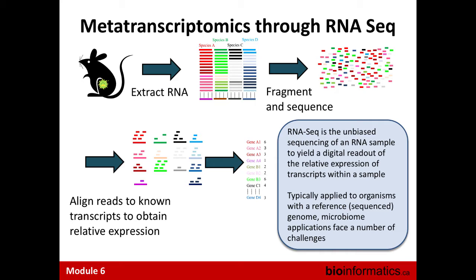How do we actually go about doing metatranscriptomics? It's essentially RNA-seq applied to the microbiome rather than an individual tissue. We take gut contents from a mouse, extract the RNA - which is a set of transcripts from all these different species - these transcripts are then fragmented, sequenced, and then you have the task of aligning all those reads to known transcripts. That gives you a relative expression - a digital readout of each different bacterial transcript in your sample. One major challenge is that unlike single-organism RNA-seq, we don't have a very good set of reference genomes for microbiomes, making the mapping and annotation step the primary challenge.